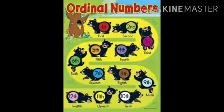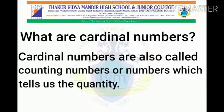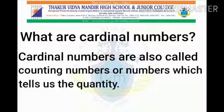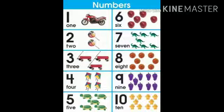Children, today we are going to learn about ordinal numbers. But before learning ordinal numbers, let us see what cardinal numbers are. Cardinal numbers are also called counting numbers — numbers which tell us the quantity. Can you see numbers 1 to 10? These numbers are called cardinal numbers. Cardinal numbers tell us the quantity of objects.